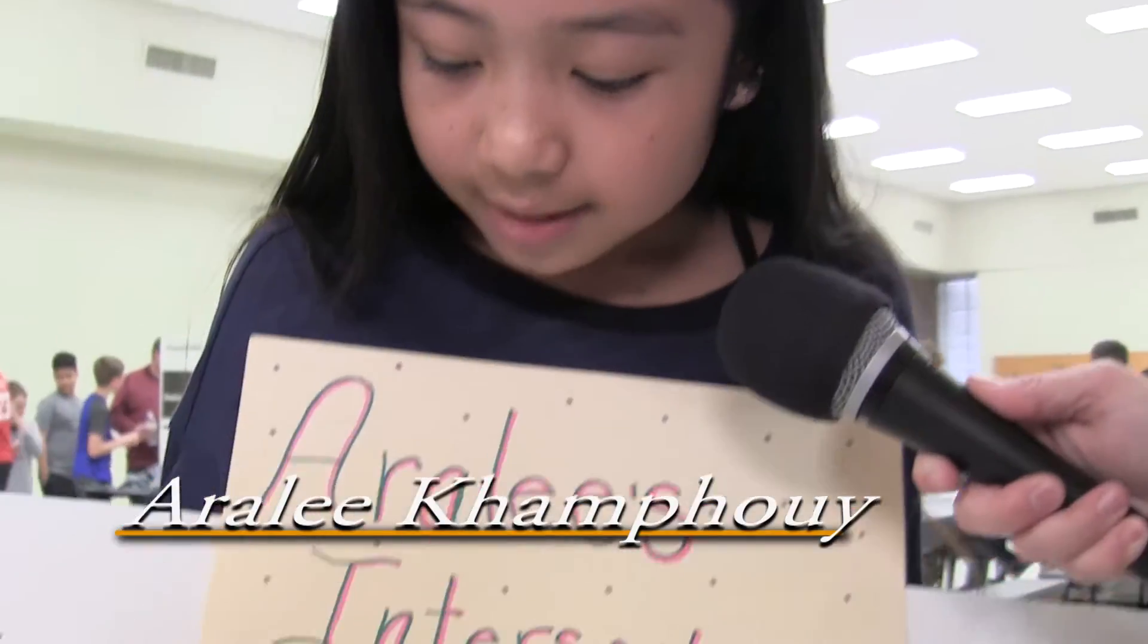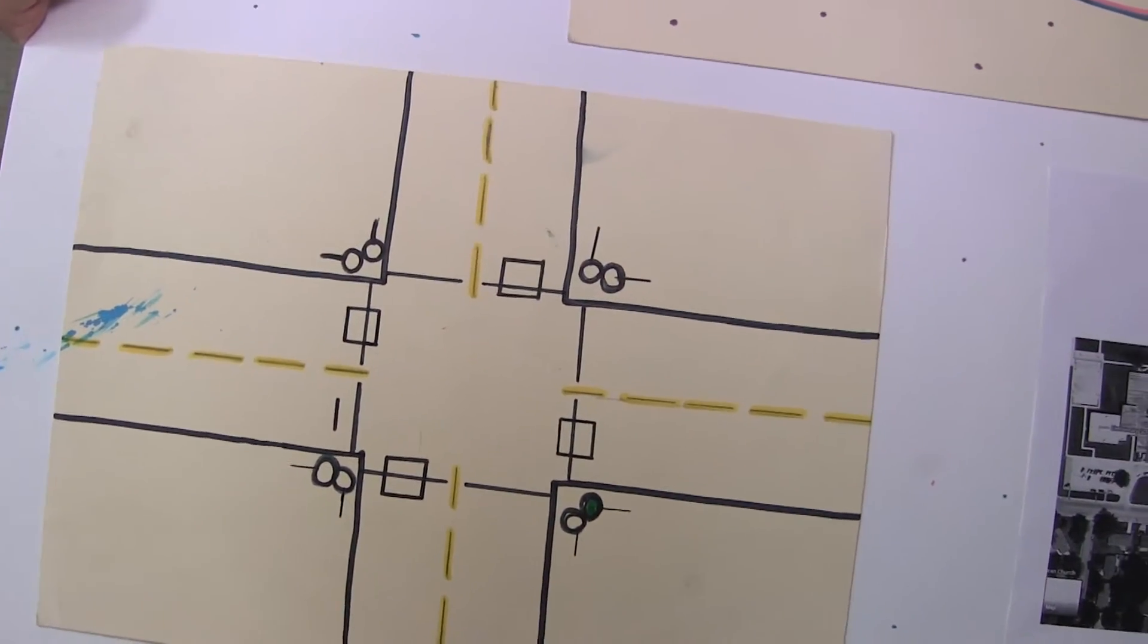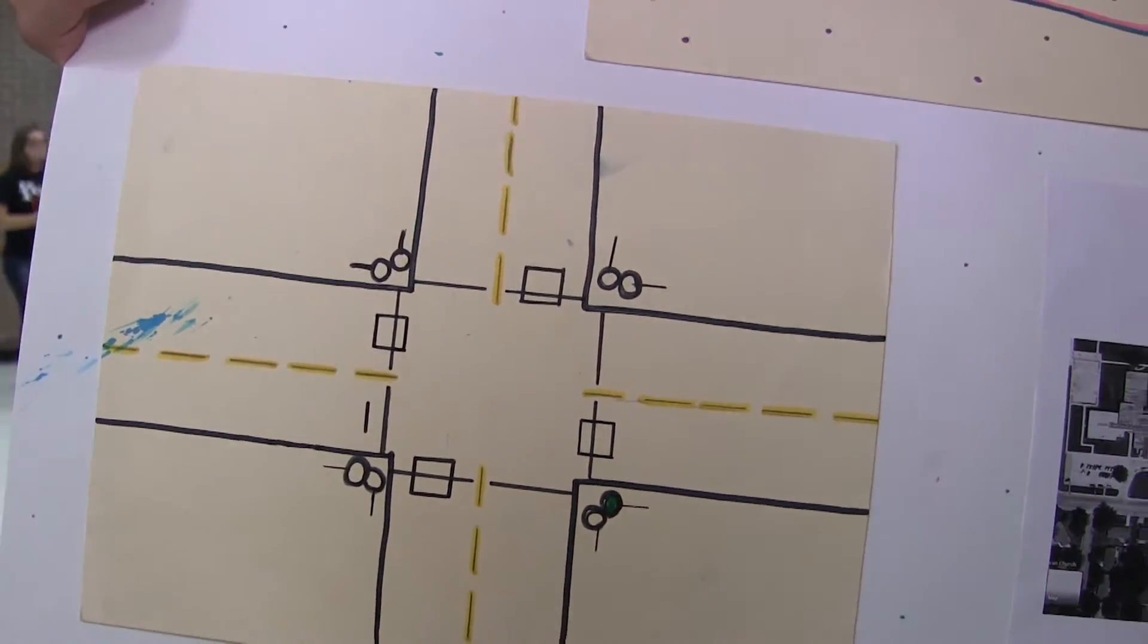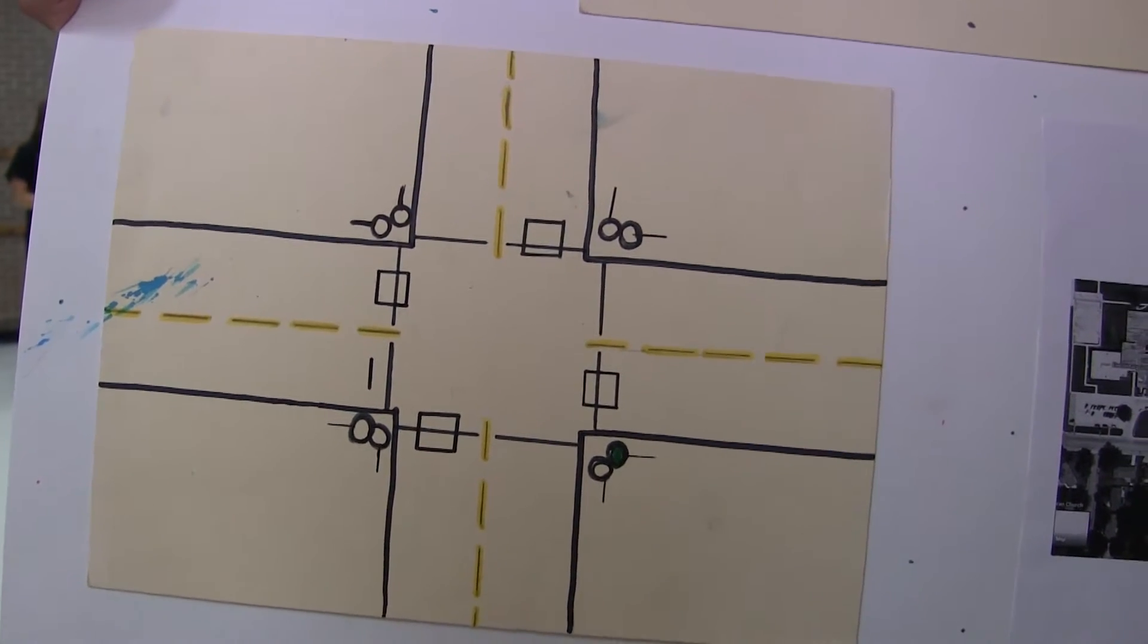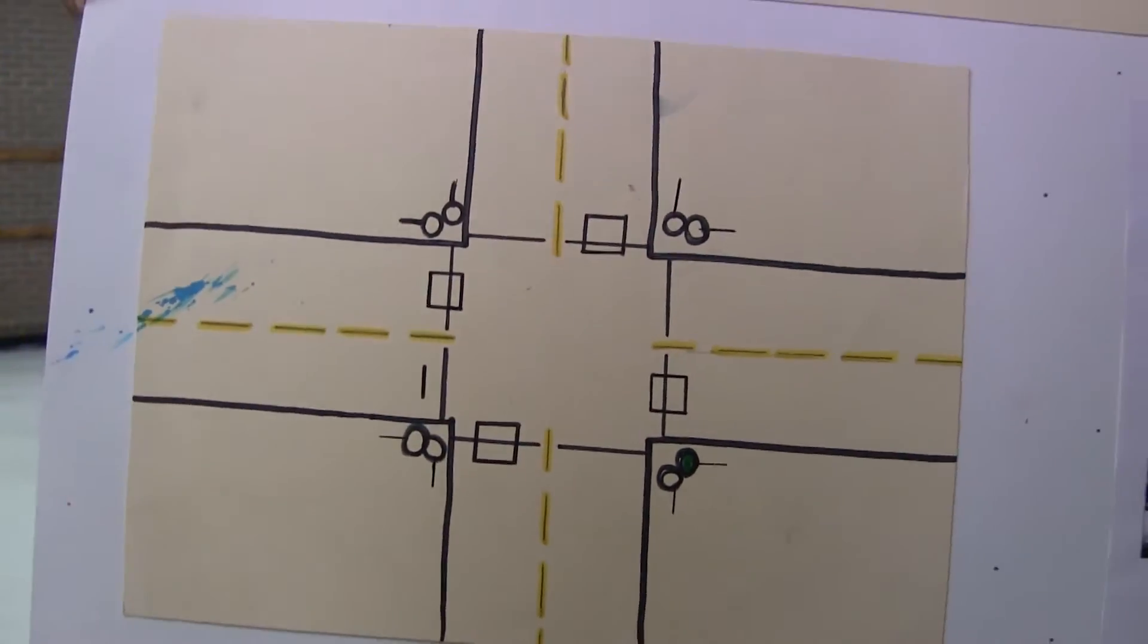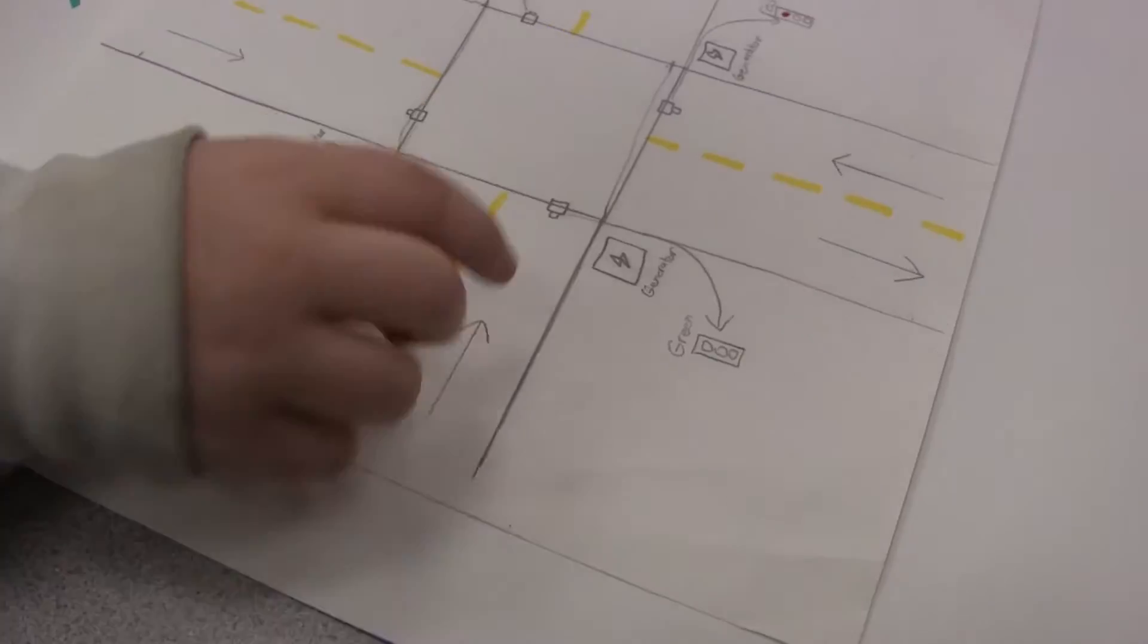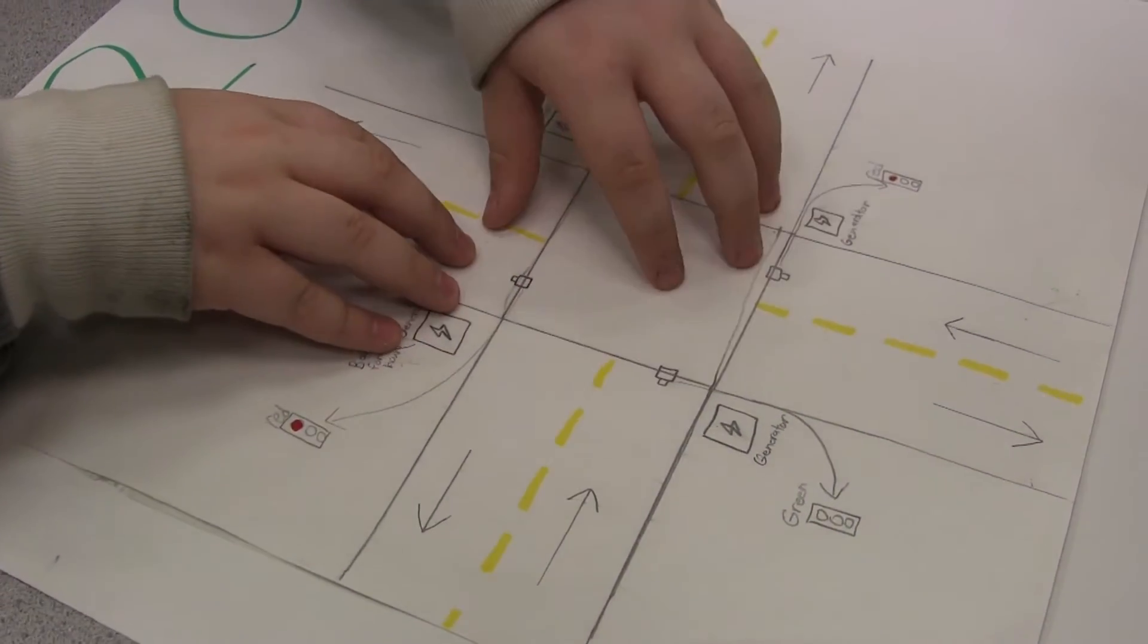So this is my intersection design. The sensors and lights will connect, and the sensors will be covered in rubber so if it breaks it's easy to replace. When a car gets there, the light will turn green which means they can go right, left, or straight. Only one car will go at a time so it can be safer. Like this one's green, only they can go while the other three are stopped.